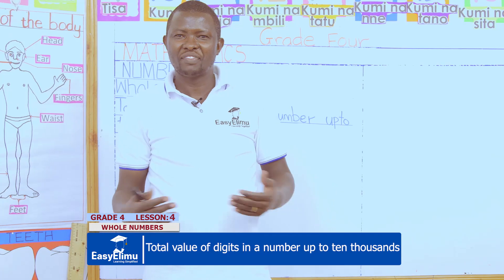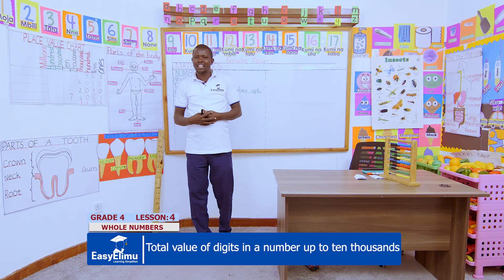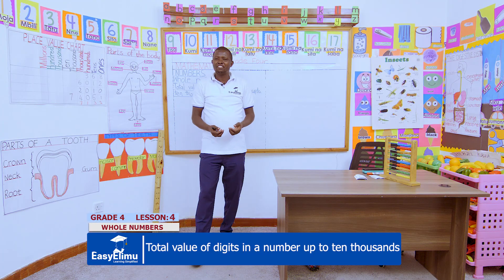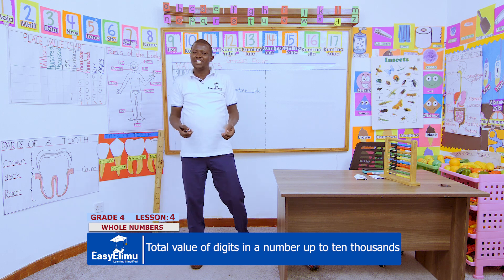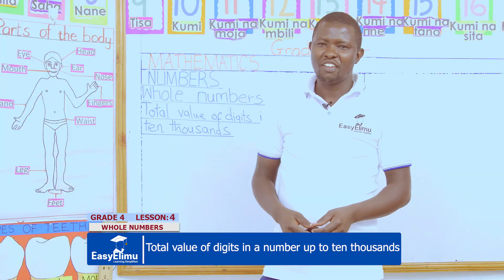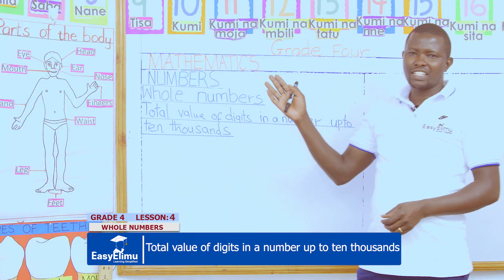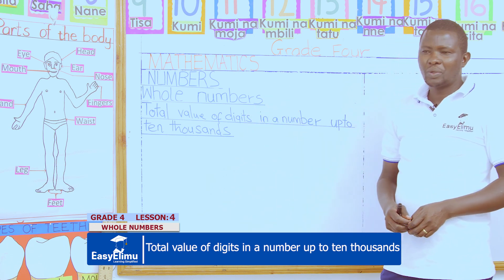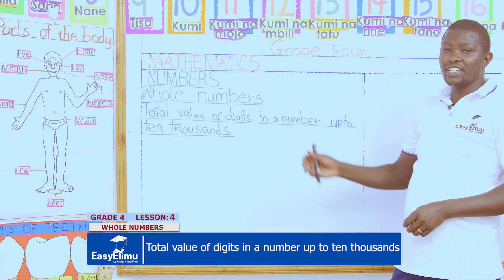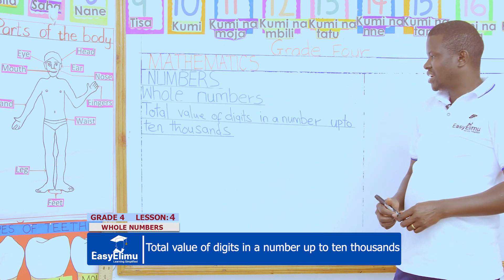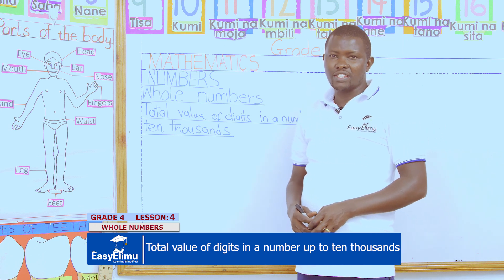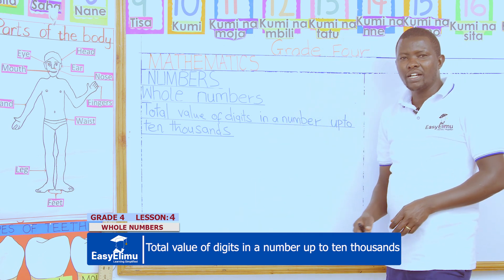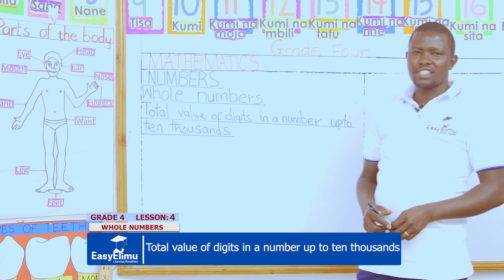Hello learners, my name is Teacher Jonathan. Welcome to Easy Alimu Learning Simplified. In our lesson for today in Grade 4 Mathematics, we look at numbers — the total value of digits in a number up to 10,000.